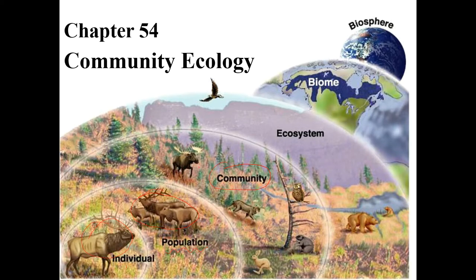So the community would include all of the members of the moose population, all of the rabbits, all of the owls, all of the different types of pine trees, all of the insects, all of the grass, all of the different types of birds. That would be the community — it's all of the biotic factors. Bio means life, meaning it's all the living things in this area.